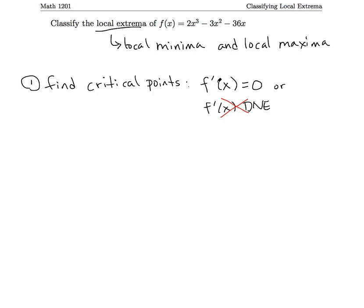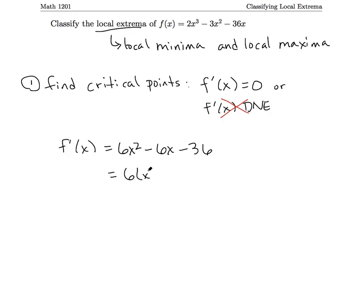All we really need to know is when our derivative equals zero. So we'll start by computing the derivative. The derivative f'(x) = 6x² - 6x - 36, using the power rule three times, once for each term. Next, I'm going to factor this to figure out what x values make the derivative equal to zero. Factoring out a 6 gives 6(x² - x - 6), and then that factors as 6(x - 3)(x + 2).